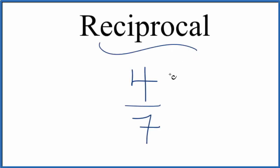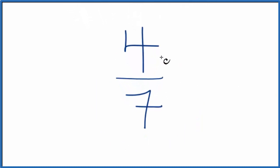If you're asked to find the reciprocal for four sevenths, here's how you do it. When we look at reciprocals, what we're going to do is take the numerator and replace that with the denominator. We're going to flip them.